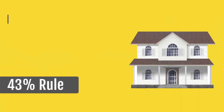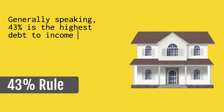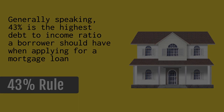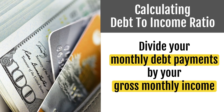Now we're gonna look at the 43% rule. Generally speaking, 43% is the highest debt-to-income ratio a borrower should have when applying for a mortgage loan. The way you calculate your debt-to-income ratio is you divide your monthly debt payments by your gross monthly income — that's before taxes and deductions are taken out.